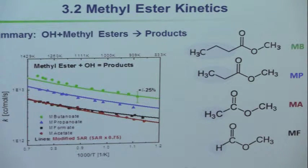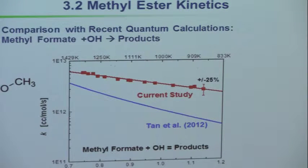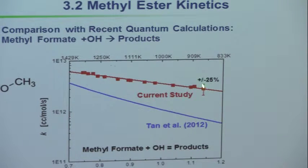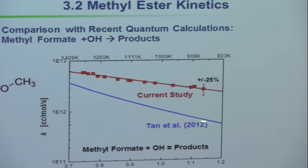We think these are good to better than 25%. For the formate case, here are our results — which we think are better than 25%. This is the result of a theoretical study at Princeton. It reflects the fact that in 2012, theory still had a pretty big problem getting agreement with experiments. Generally the discrepancy gets worse as temperature gets lower.